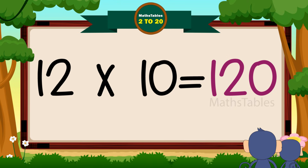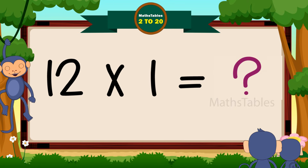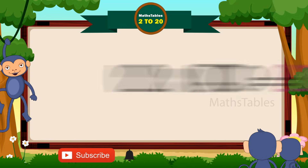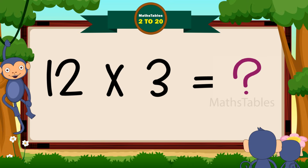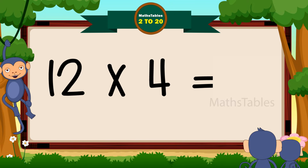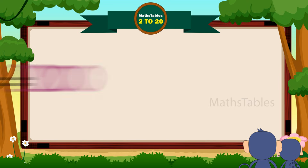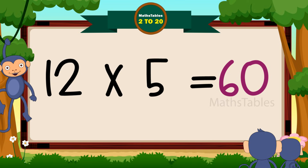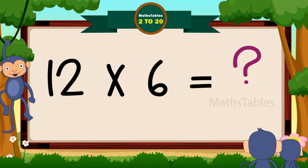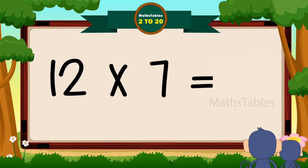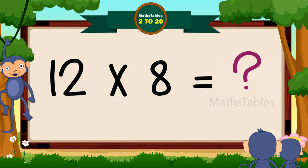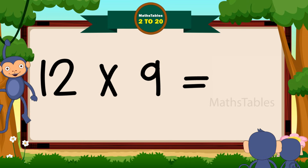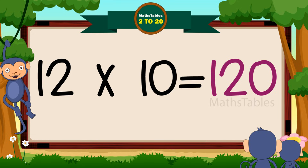12 ten's are 120. 12 one's are 12. 12 two's are 24. 12 three's are 36. 12 four's are 48. 12 five's are 60. 12 six's are 72. 12 seven's are 84. 12 eight's are 96. 12 nine's are 108. 12 ten's are 120.